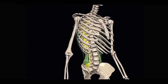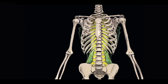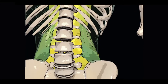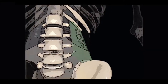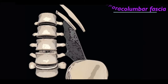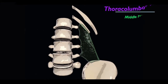The middle layer of the thoracolumbar fascia is attached to the lower border of the 12th rib and the lumbocostal ligament superiorly, and the iliac crest inferiorly. Medially, it is attached to the transverse processes and intertransverse ligaments of the lumbar vertebrae.